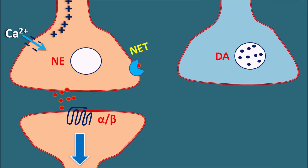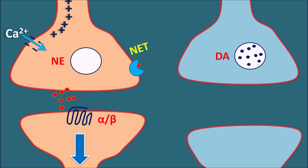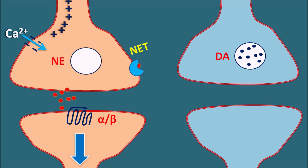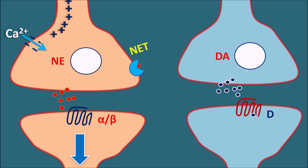Similarly, dopaminergic presynaptic neurons store dopamine, which is released by exocytosis and acts on postsynaptic neurons equipped with dopamine receptors. Within the CNS, postsynaptic neurons may carry more than one type of receptor and can be activated by different neurotransmitters. Just like norepinephrine, dopamine has a corresponding dopamine transporter (DAT) on dopaminergic neurons, which mediates reuptake of released dopamine back into the nerve terminal.